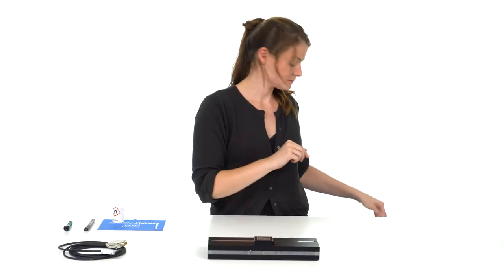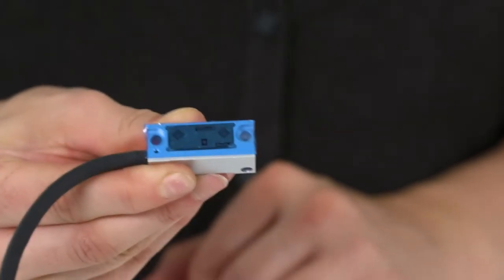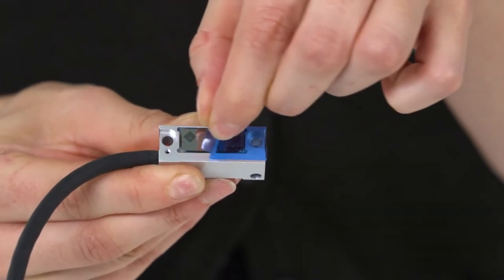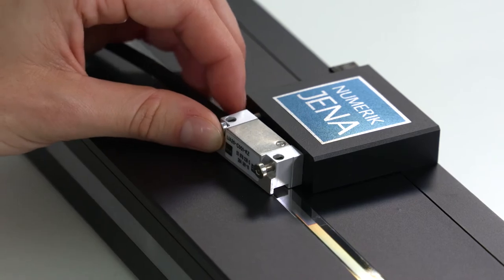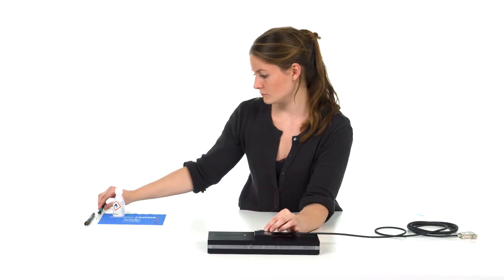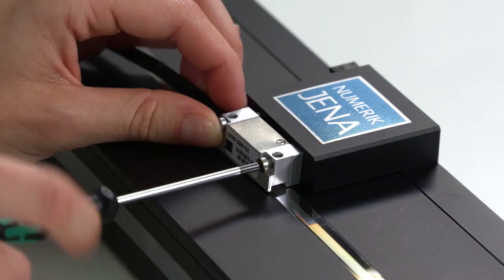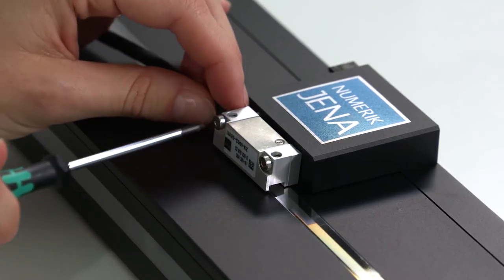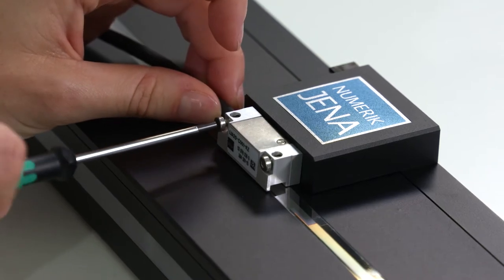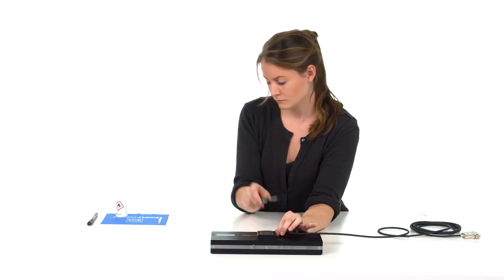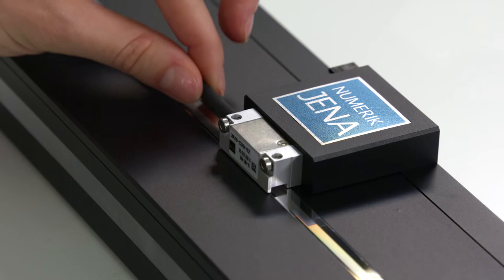This is followed by assembling the scanning head. Laina first removes the protective film from the sensor glass and holds the scanning head against the mounting surface. Now the scanning head can be fixed by using the two screws provided. It is important to leave the screws slightly loose at first, so that the scanning head can still be moved back and forth a bit.